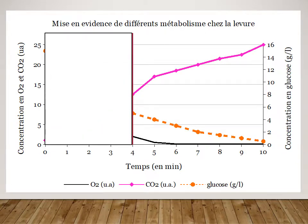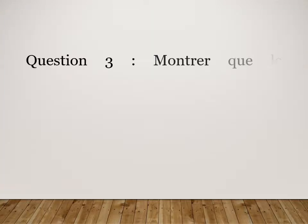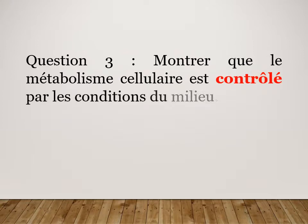Dans la question 2, vous devez montrer que les deux types de métabolisme s'accompagnent d'échanges gazeux avec le milieu, et vous devez ensuite écrire l'équation de la respiration et de la fermentation. On sait qu'au bout de quatre minutes il se passe quelque chose, donc on regarde avant et après : ce qui est consommé, ce qui est produit, de façon à pouvoir écrire les deux équations.